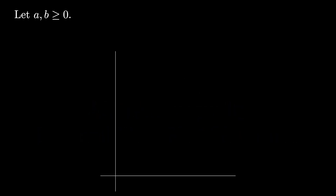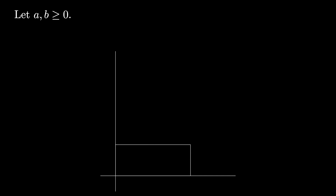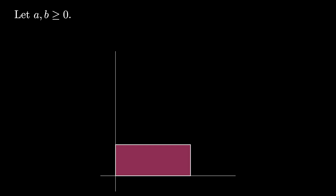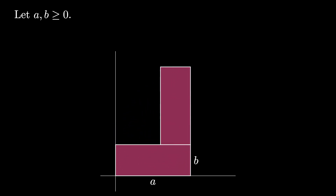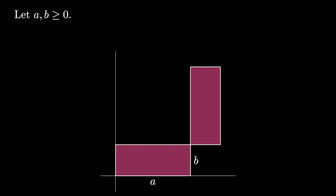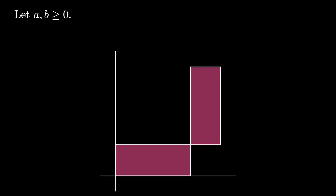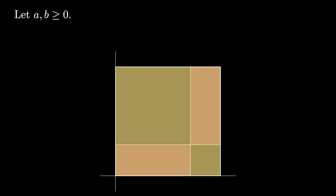Suppose that a and b are both non-negative real numbers. Then we can place an a by b rectangle with one corner at the origin in the plane like this. Now take a second copy, rotate it, and shift it to the corner of the first rectangle opposite the origin. These two rectangles fit perfectly in this a plus b by a plus b square.